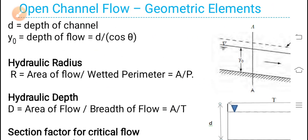Now, if D is the depth of channel — in some books Y is also taken, and in some books small h is also taken as depth of channel. Don't get confused. Depth of channel is important. Y0 is depth of flow, while D or Y is the depth of channel.